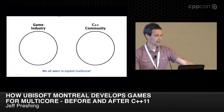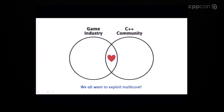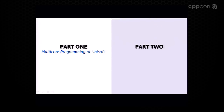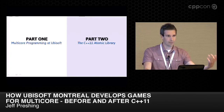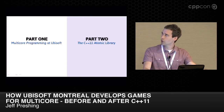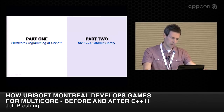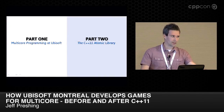The goal of this talk is to try to bring the two communities closer together. Part one is going to be about multi-core programming at Ubisoft — a glimpse at how we do things. Part two is going to be a quick introduction to the C++ Atomic Library. A lot of people in games have not really been exposed to it yet, but compiler support is pretty mature now, so I think it's ripe.